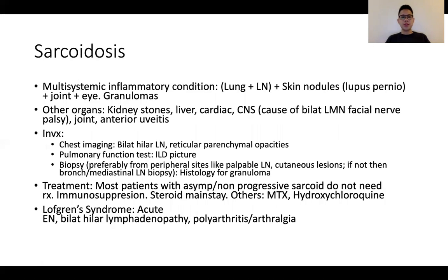Sarcoidosis is another multi-systemic inflammatory disorder. Key organs of involvement include the lungs with associated lymph node involvement where there can be hilar lymphadenopathy. Dermatological manifestations such as lupus pernio, joint and eye manifestations are also common. Investigations include a chest radiograph to look for hilar adenopathy or reticular parenchymal opacity. Pulmonary function tests may show an interstitial lung disease restrictive picture, and biopsy of suitable sites would clinch the diagnosis with demonstration of granuloma.